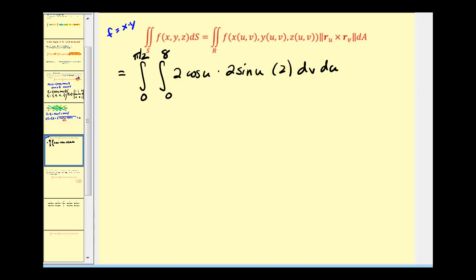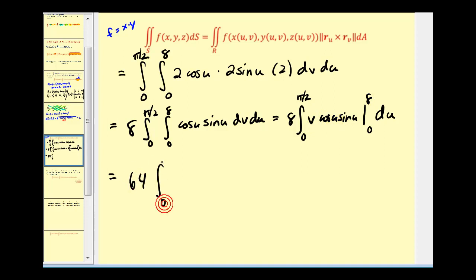So let's pull out the eight and start to integrate. Integrating with respect to v is just going to give us v times cosine u sine u. Replacing v with eight, we'll have eight cosine u sine u minus zero, so we'll have sixty-four cosine u sine u.